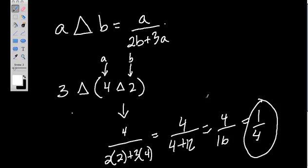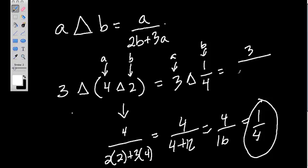So now hold on to this number. We go back to our original equation. Now instead of 3 triangle 4 triangle 2, we have 3 triangle 1 fourth. Now we use the same process. Think of this now as A, and this as B, and we use this set of rules right here. So it becomes 3 divided by 2 times 1 fourth. Again, 3 is A, and A goes in the numerator. 1 fourth is B, and it's 2 times 1 fourth, plus 3 times 3.